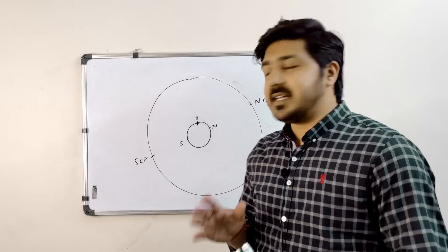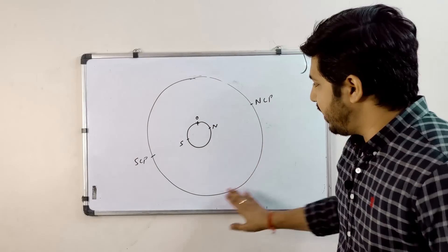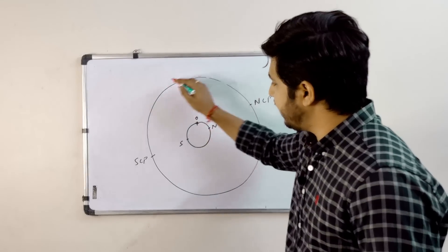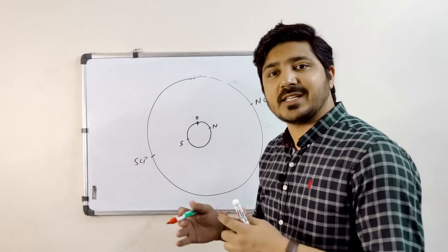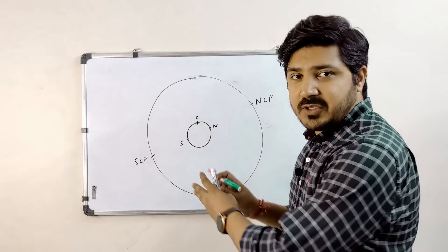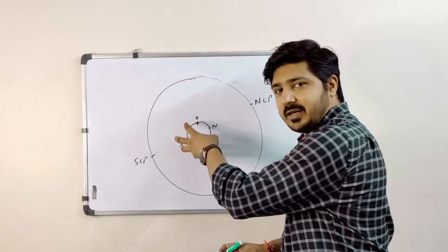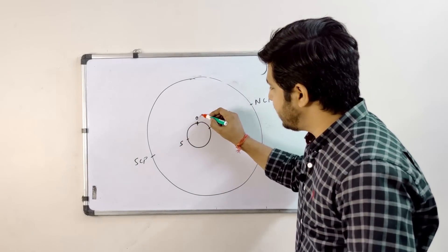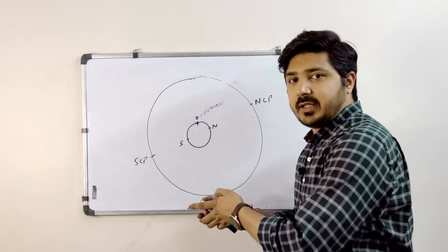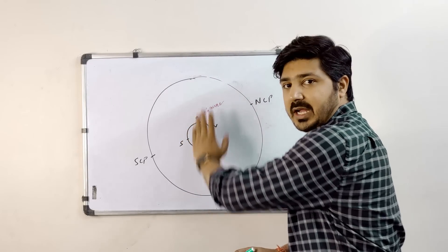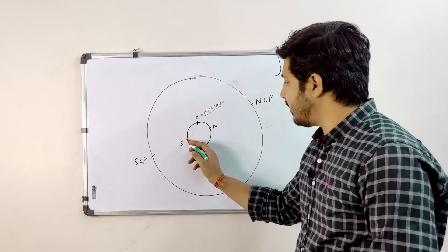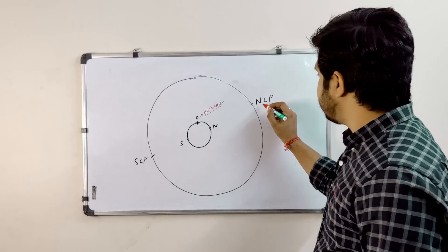Let's assume this is the celestial sphere around the earth. We have already covered that this is the earth, and we create one imaginary sphere around the earth known as the celestial sphere, in which all celestial bodies are embedded. We have rotated the earth a little bit so that this observer point is pointing upwards, and now north has come to this side and south is here.